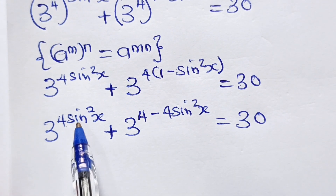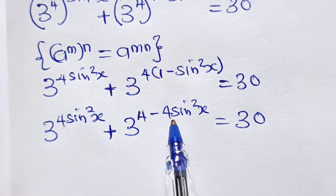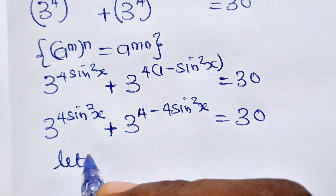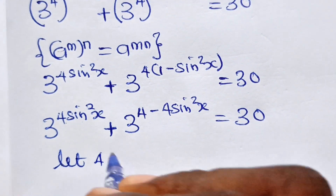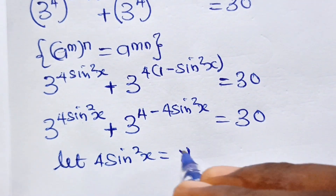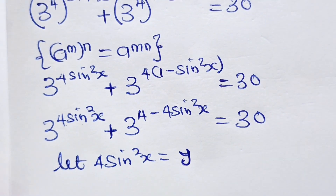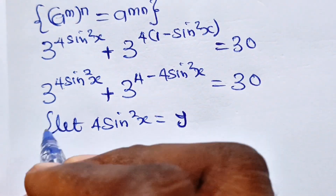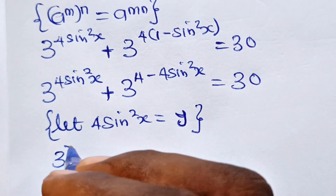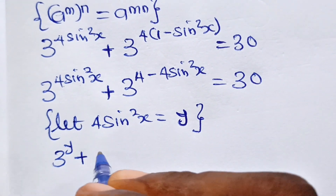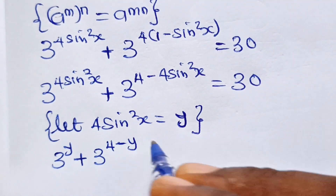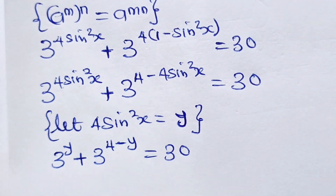You can see we have 4sin²x appearing in the exponents, so let 4sin²x be equal to y. This becomes 3 to the power of y plus 3 to the power of (4 − y) is equal to 13.